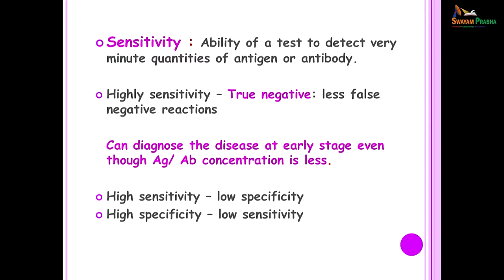Sensitivity is the ability of a test to detect very minute quantities of either antigen or antibody. Highly sensitive tests are those which show true negatives, so there are fewer false negatives. They can diagnose the disease at an early stage even though the quantity of antigen or antibody may be less. Usually a highly sensitive test shows low specificity, and a high specificity test shows low sensitivity.